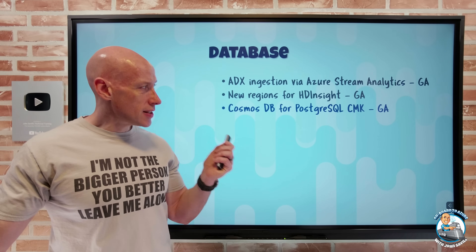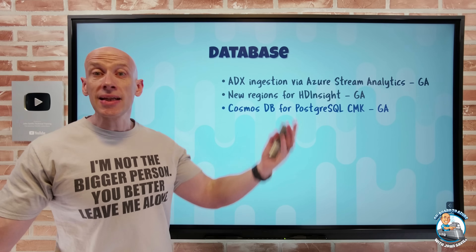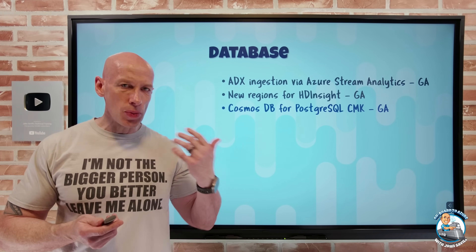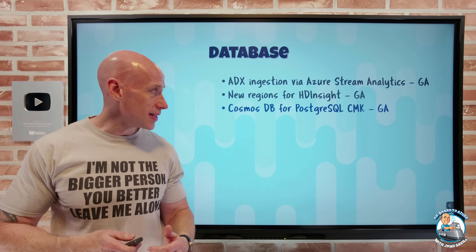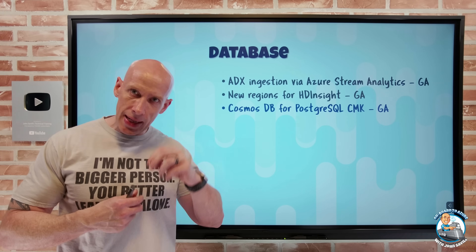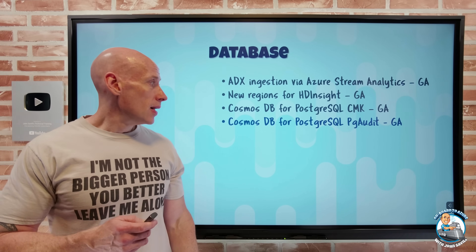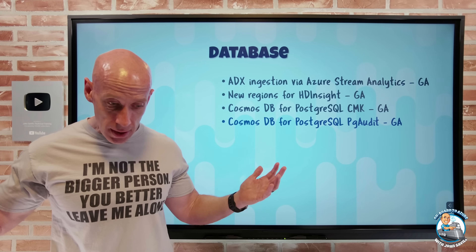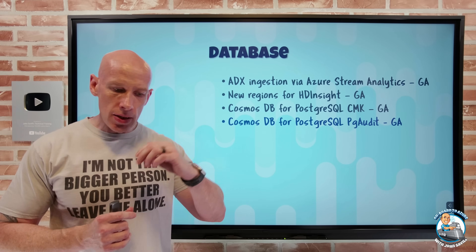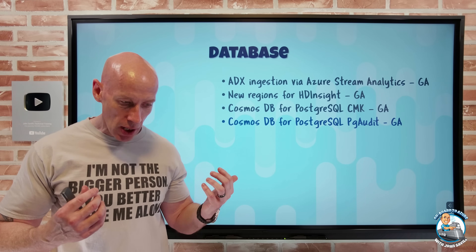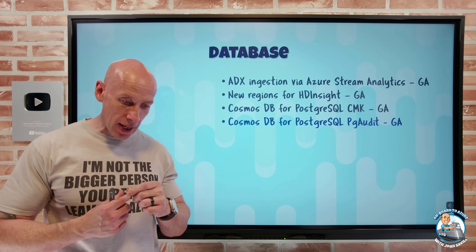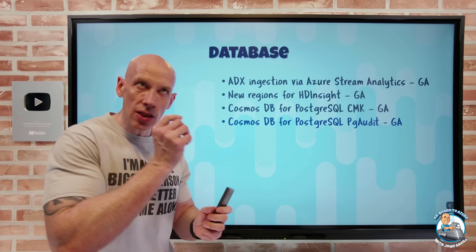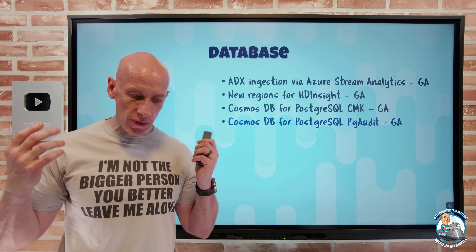Cosmos DB for PostgreSQL - that's the larger-scale version using Citus extensions for PostgreSQL, allowing data sharding and distributed tables for huge scale. Now I can use my own key for encryption, with that key living in Azure Key Vault. Also now available is PG Audit - audit logs for all or some of the nodes in the cluster, covering writes, reads, role changes, and data definition language commands. I get detailed session and object audit logging, saveable to a storage account, event hub, or Log Analytics workspace.